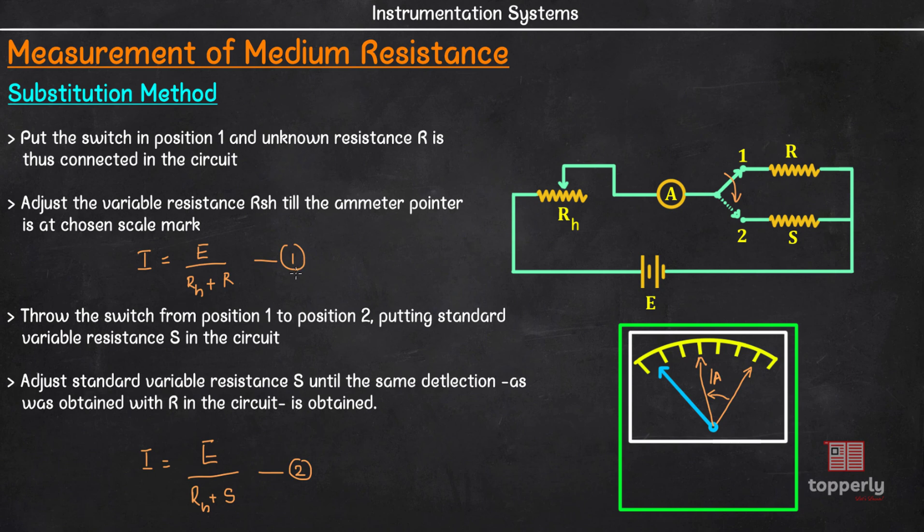Now we can equate equation number 1 and equation number 2 as the currents are set to same magnitude. So, equation 1 equal to equation number 2 is E by RH plus R equal to E by RH plus S. Here we can cancel out these E's and we said that, we are not changing the value of RH once the current is set. So, we can cancel out this RH also which brings us to R equal to S. And since we know the value of S, we can find out the value of R. So, this is how substitution method works.